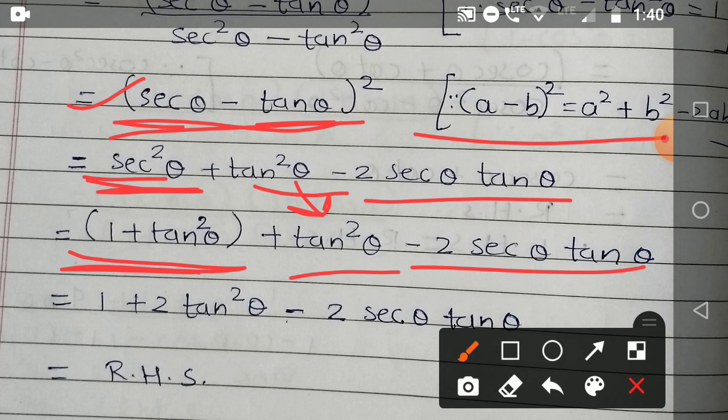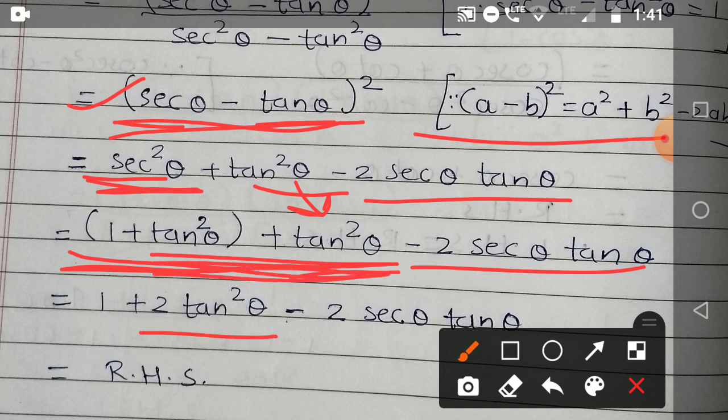Now we will open the bracket, so 1 plus tan²θ is 2 times, so 2 tan²θ minus 2 sec θ tan θ. So this is what is our RHS.